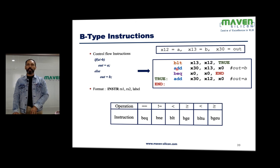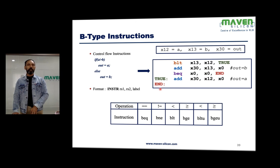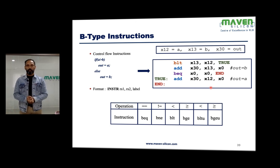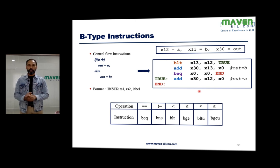The next instruction executes sequentially: ADD X30, X13, X0, so out is B since X13 holds B. Then to skip the next instruction, we use BEQ X0, X0 — since X0 is always 0, 0 always equals 0, so it unconditionally jumps to the end label. This is how you control execution flow and write assembly programs using B-type instructions.